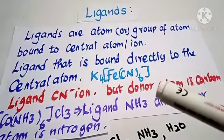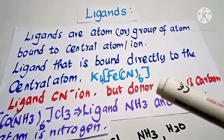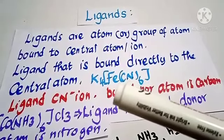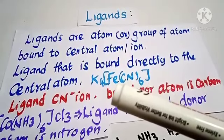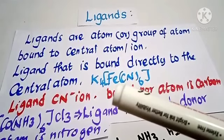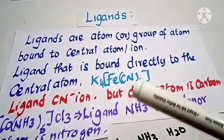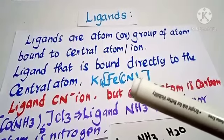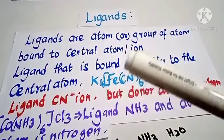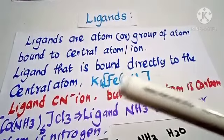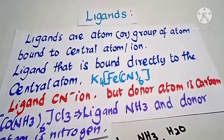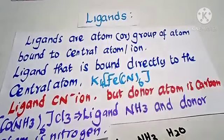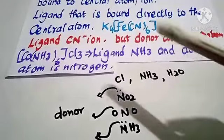In potassium ferrocyanide, K4Fe(CN)6, within the square brackets, iron (Fe) is the central metal atom. Cyanide (CN) is the ligand, directly bonded to the iron ion. In cyanide, carbon is the donor atom that directly bonds to the central metal ion.